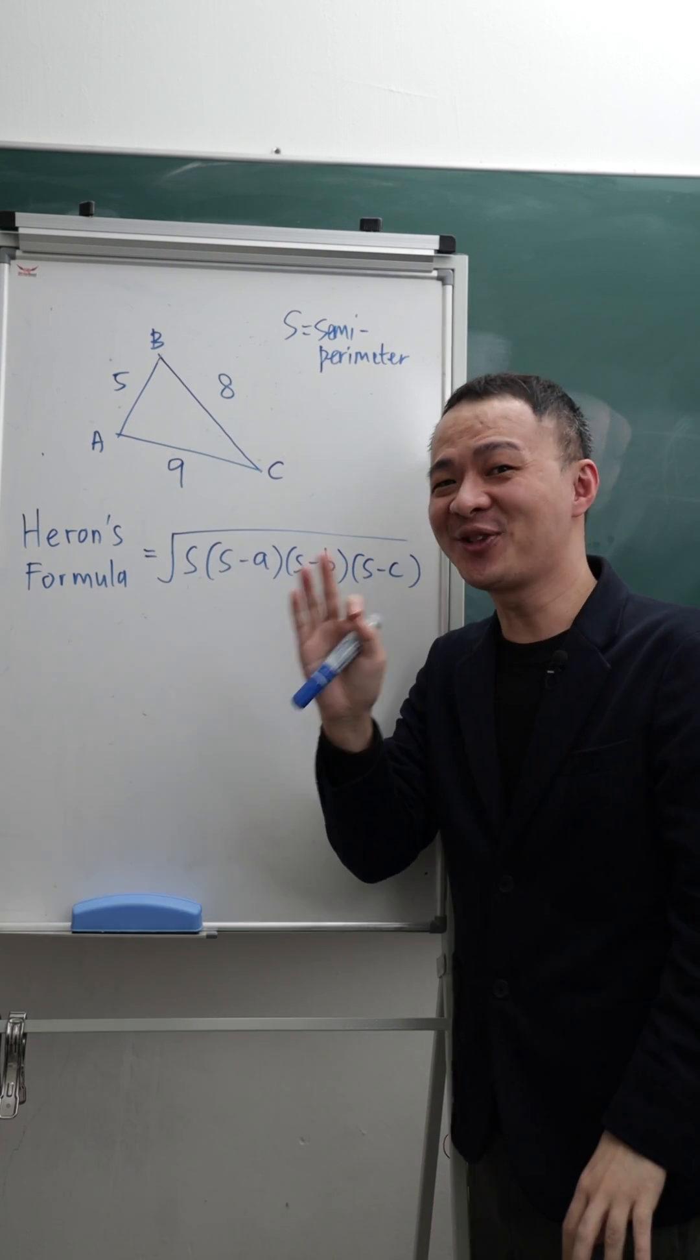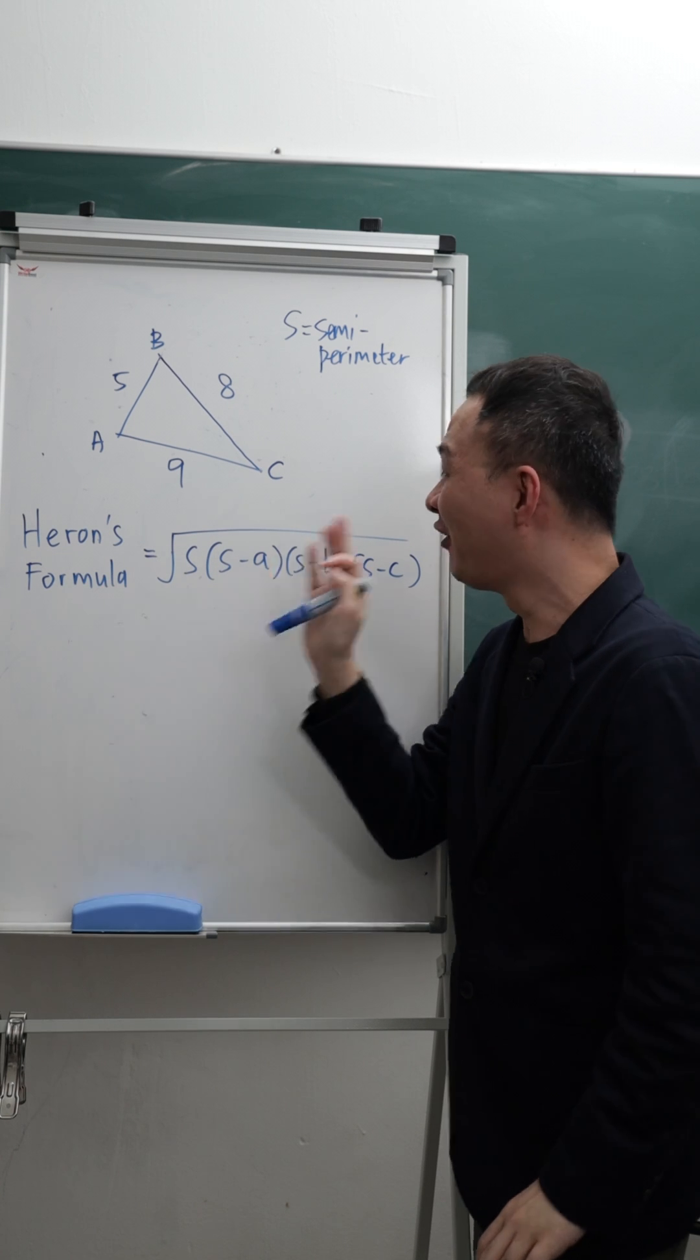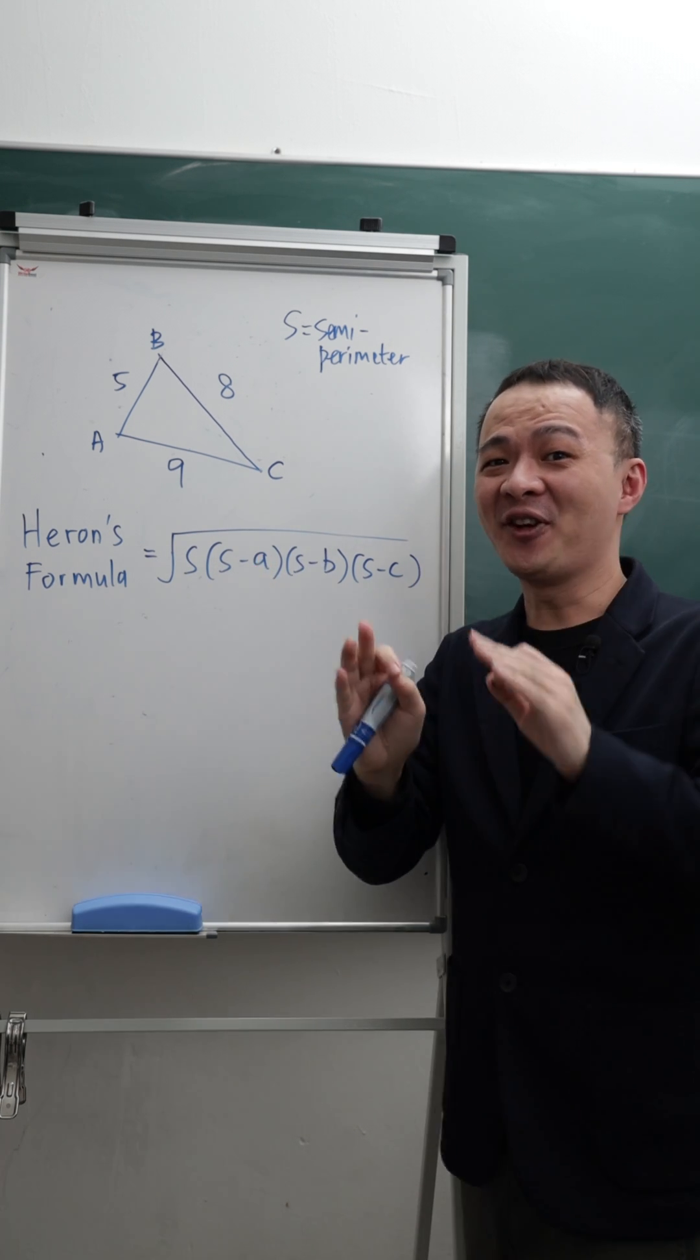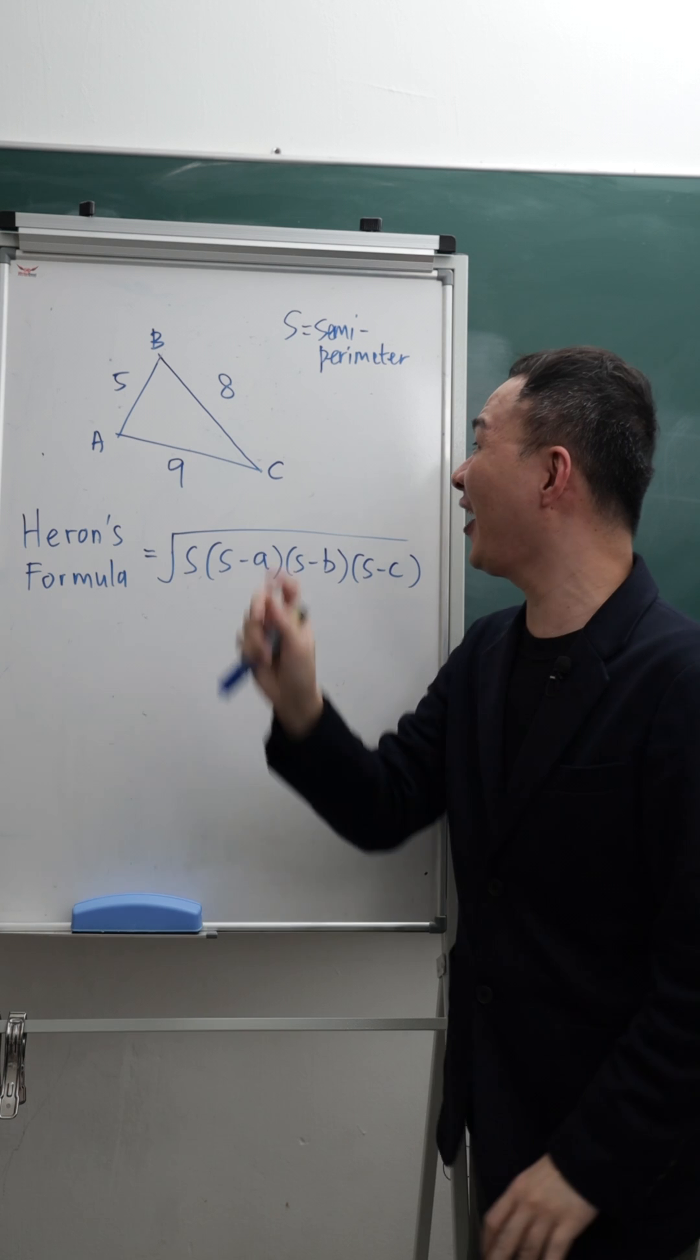So therefore, today I'm going to introduce Heron's formula, which is a very special formula to find the area for any type of triangle, as long as you have the perimeter.